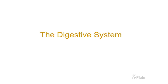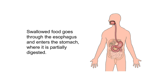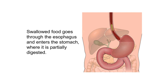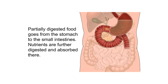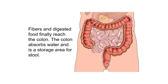The digestive system. The digestive system helps the body digest and absorb the food we eat. Swallowed food goes through the esophagus and enters the stomach, where it is partially digested. Partially digested food then goes from the stomach to the small intestines, where nutrients are further digested and absorbed. Fibers and digested food finally reach the colon.